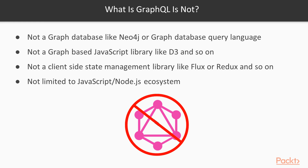Let's understand a few misconceptions in the GraphQL ecosystem. GraphQL is often confused with database technology, but GraphQL is not a graph database like Neo4j. It's also not a graph-based JavaScript library like D3, and it's certainly not a client-side state management library like Flux or Redux. And it's not limited to the JavaScript or Node.js ecosystem.